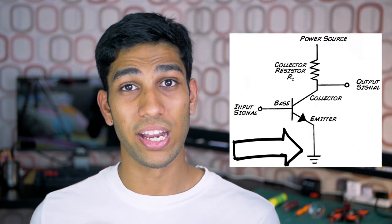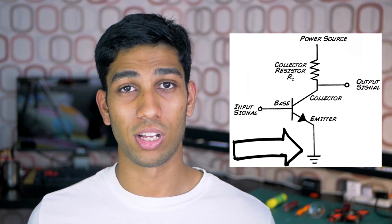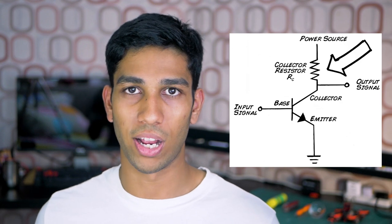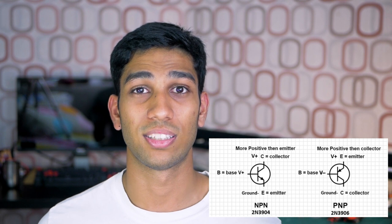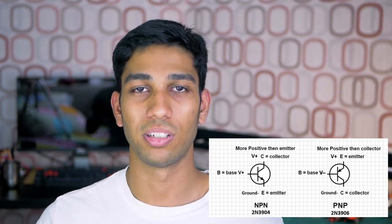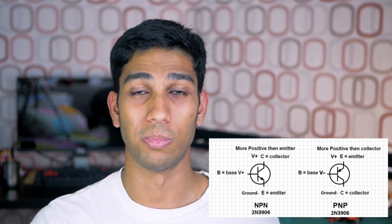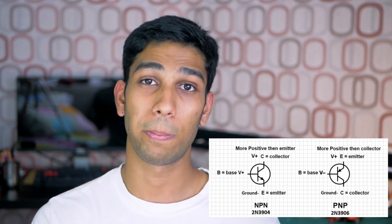Your power source's negative or ground terminal will connect to the emitter pin of the transistor, while your load — like a motor or LED — will connect to the collector pin of the transistor. This technique is called sourcing the load. PNP transistors are different in that they require a negative current or voltage to the base to become conductive, and they connect the positive power supply terminal to your load rather than connecting the negative terminal, as in an NPN transistor.